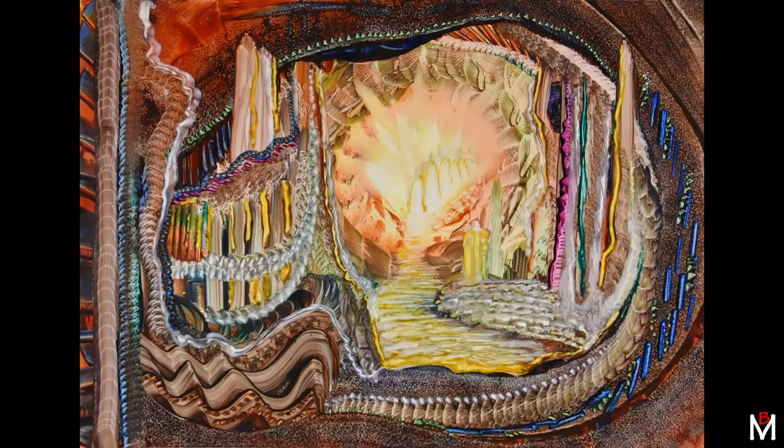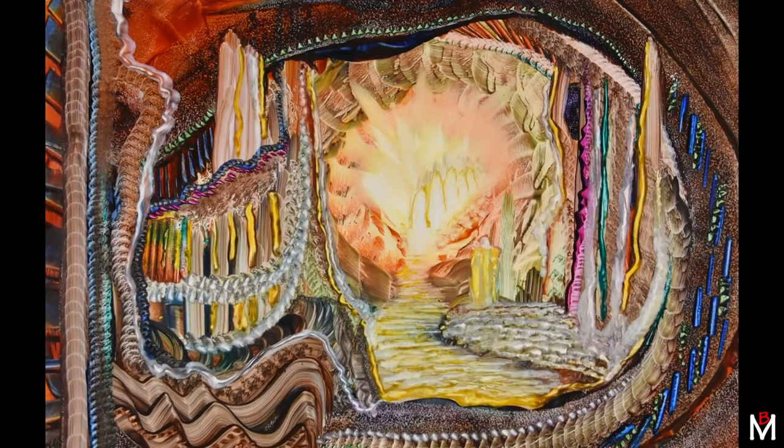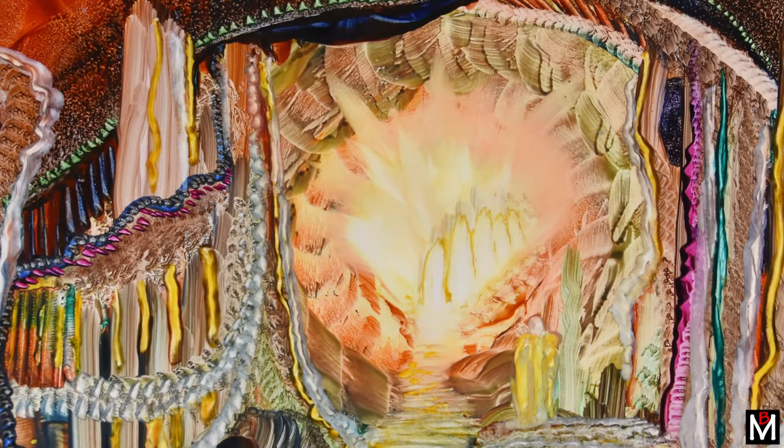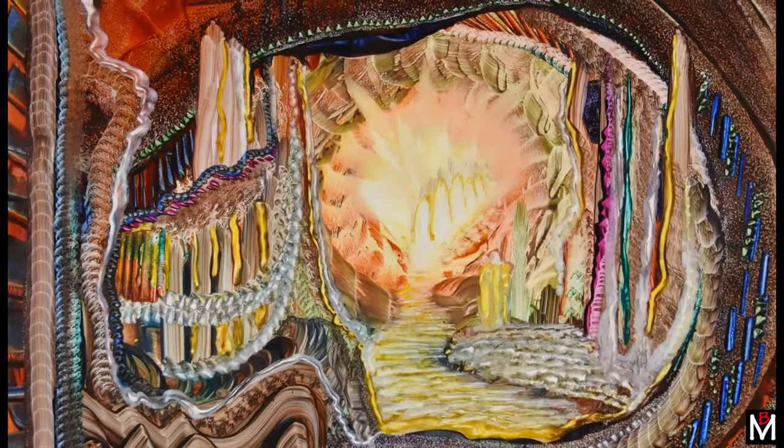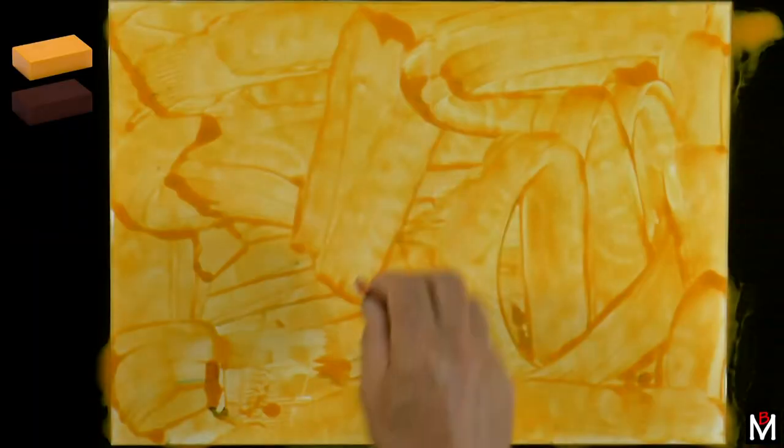The process begins by applying a coating of yellow all over. It wasn't preconceived, it evolved as I went through, and these angels descending formed the title and the heart of the image. So let's see how it all came together.